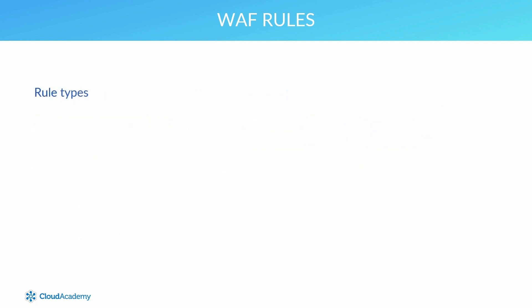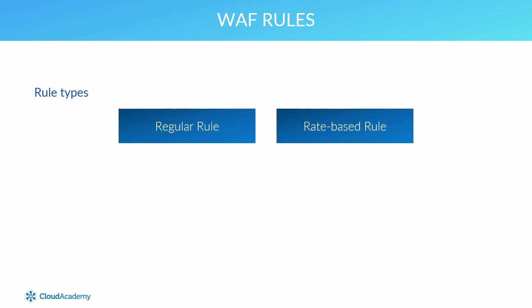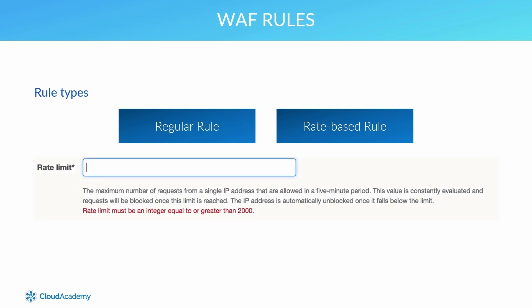When creating your rule, you'll be asked to select a rule type: a regular rule or a rate-based rule. The only difference between a rate-based rule and a regular rule is that rate-based rules count the number of requests that are being received from a particular IP address over a time period of five minutes. When you select a rate-based rule option, you are asked to enter the maximum number of requests from a single IP within a five-minute time frame. When the count limit is reached, all other requests from that same IP address are then blocked.